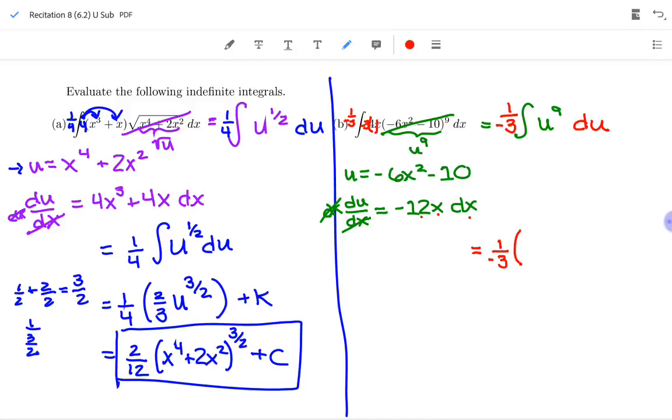So I'm just going to keep the 1 over negative 3 or negative 1 third. I'm going to add 1 to my power 9. 9 plus 1 is 10. So I'm going to do 1 over 10, u to the 10th plus k. Integration. The whole point of that hard substitution is that integration should be the easy part. Just add 1, put it in the denominator, put it up top.